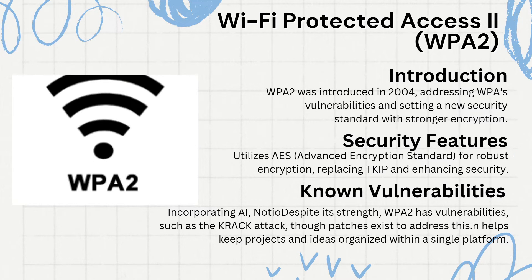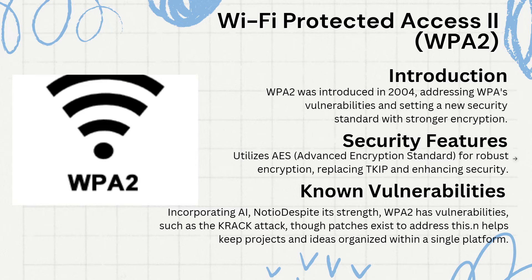WPA2 comes in two flavors: Personal, also known as WPA2-PSK, and Enterprise. WPA2 Personal uses a pre-shared key, ideal for home and small office networks, while WPA2 Enterprise uses a server to authenticate users, which is suited for larger organizations. While WPA2 was a big step up in security, like all systems, it's not without its vulnerabilities. As techniques evolved, so did the exploits.